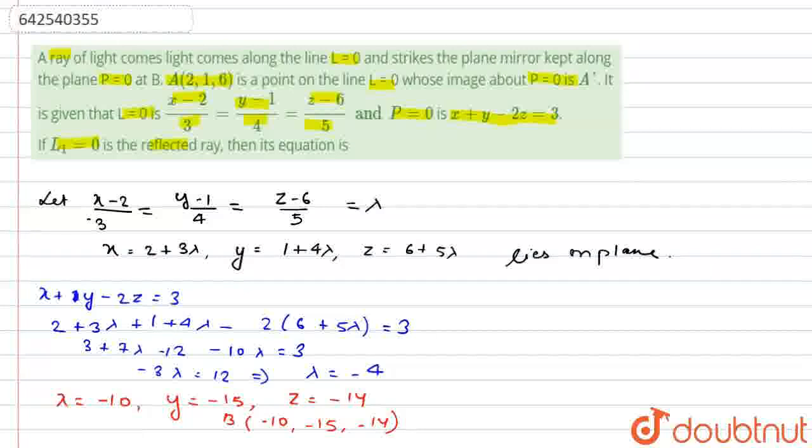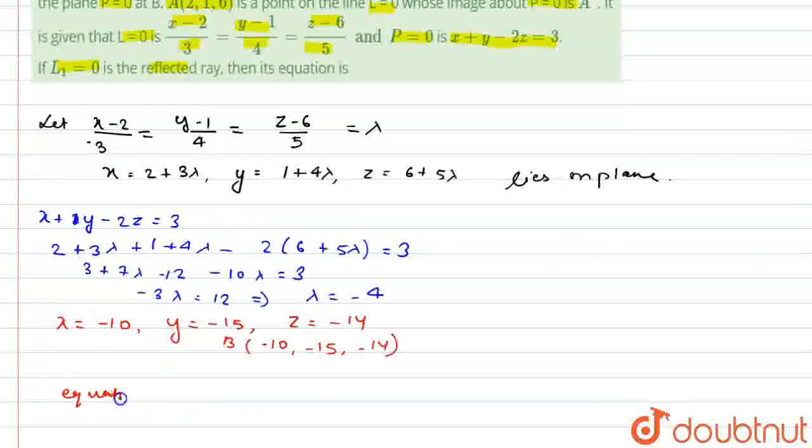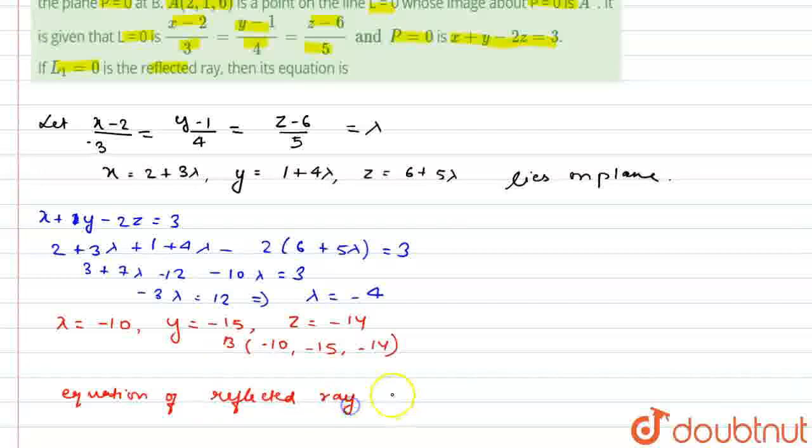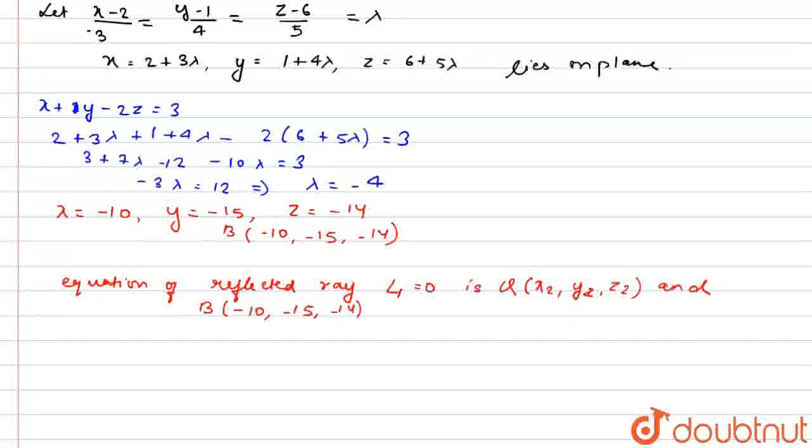The equation of the reflected ray, that is L1 equals 0, is the line joining Q, is line joining Q x2, y2, z2, and coordinate B, that is minus 10, minus 15, minus 14. The equation will be x plus 10 by 16.